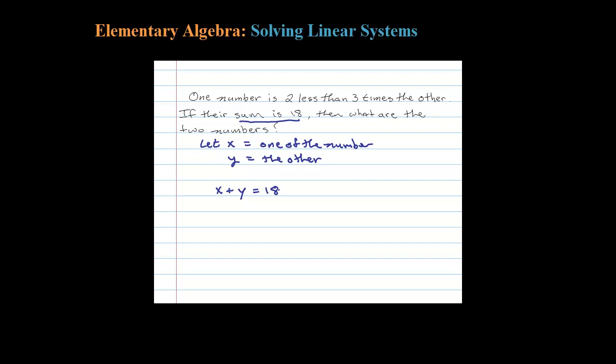The second equation comes from this fact: one number is two less than three times the other. So here's the two less, three times the other minus two. So here's our setup.